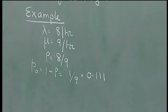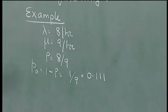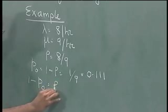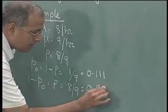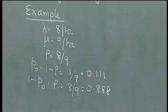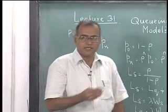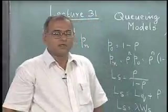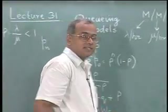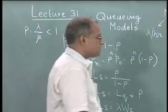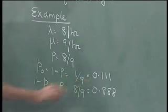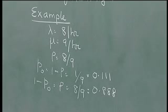When there is nobody in the system, it means that the server is free. The probability that the server is not free is 1 minus P0, so 1 minus P0 is equal to rho, which is equal to 8 by 9, which is equal to 0.889. This is the probability that there is at least one person in the system, which means the server is not free, or the server is busy or utilized. So the probability that the server is utilized in this example is 0.888.